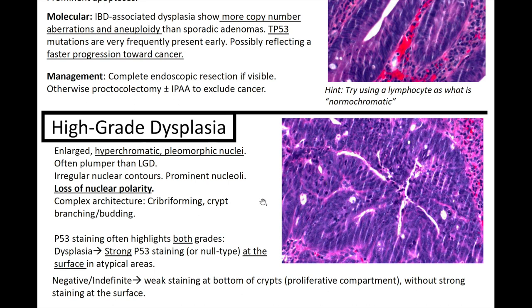Always want to be able to recognize high-grade dysplasia. P53 staining often highlights both grades — dysplasia will show strong p53 staining or null type at the surface in atypical areas, while negative or indefinite cases show weak staining at the bottom of the crypts without strong surface staining. H&E is still the gold standard, so only use p53 staining on equivocal cases — most dysplastic processes should be recognizable morphologically.